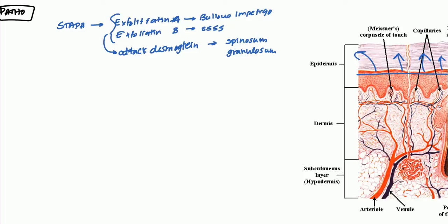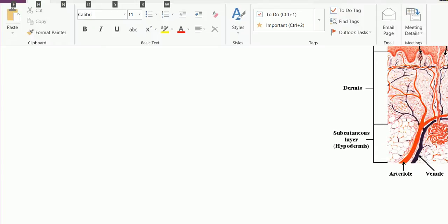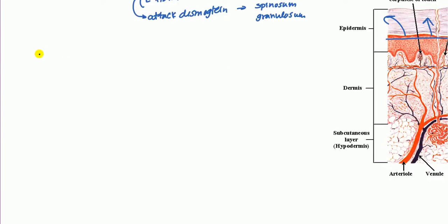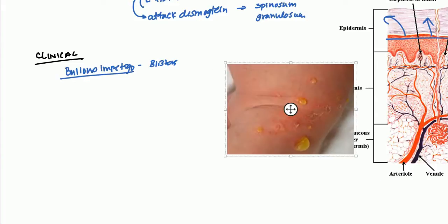So clinically, what do you see? Let's first talk about clinically. What do you see in bullous impetigo? Well, you tend to get these blisters. And these blisters are very interesting because they're kind of like a honey-colored. I'll show you a picture here. So what you'll notice is that the blisters are honey-colored. Honey-colored blisters on top of an erythematous base.